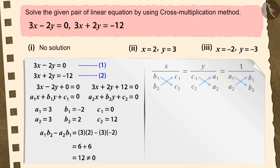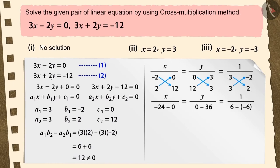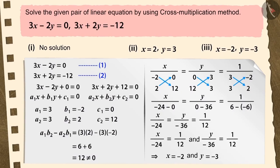After which, we will substitute these values in the cross-multiplication method. Now, after multiplying according to the arrows, we subtract the second product from the first product, which gives us x equals minus 2 and y equals minus 3, which is the only solution for the given pair of linear equations. Therefore, option 3 is the correct answer.